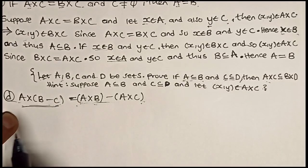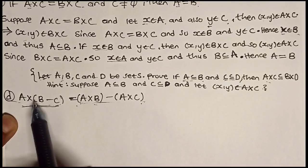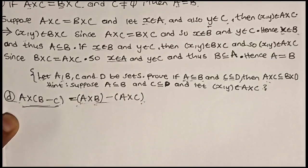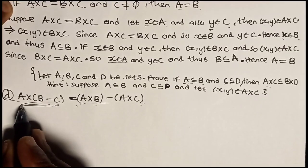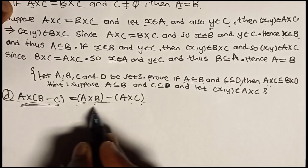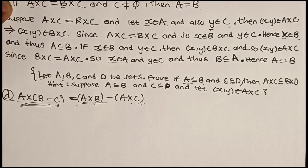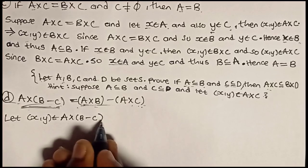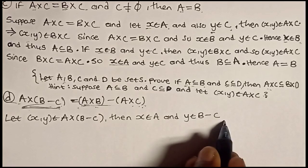Concerning part D, we have to show that A cross (B minus C) is the same as (A cross B) minus (A cross C). To show these two sets are equal, we'll let a pair (X, Y) be in the left side and show it's in the right side, and conversely let a pair (X, Y) be in the right side and show it's in the left side. Let a pair (X, Y) be an element of A cross (B minus C); then X is in A and Y is in B minus C.